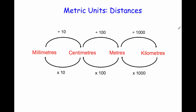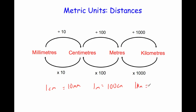Let's look at how to convert between them. One centimeter equals 10 millimeters, so to change from centimeters into millimeters we times by 10, and to change from millimeters into centimeters we divide by 10. One meter equals 100 centimeters, so to change from meters into centimeters we times by 100, and from centimeters into meters we divide by 100. And finally, one kilometer equals one thousand meters, so to change from kilometers into meters we times by a thousand, and from meters back into kilometers we divide by a thousand.